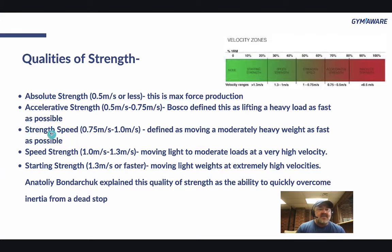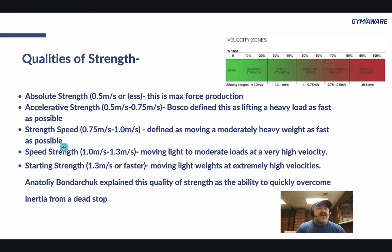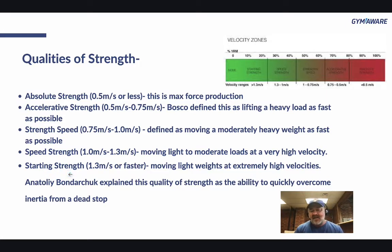These two in the middle — strength speed and speed strength — are both velocity zones that will lead to increased power. Depending on where you fall in the profile, if you're a high-velocity person but not very strong, spending time on accelerative strength and absolute strength might give you more ability to create power. However, strength speed and speed strength will both give you immediate expression of power. Starting strength is important for athletes too, but we'll get deeper into that.